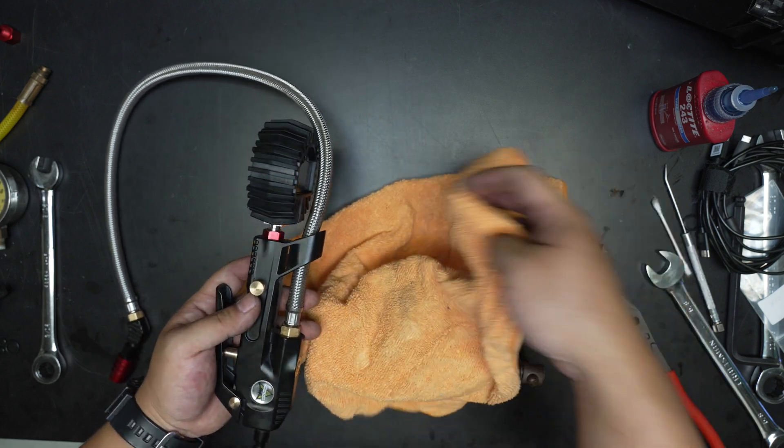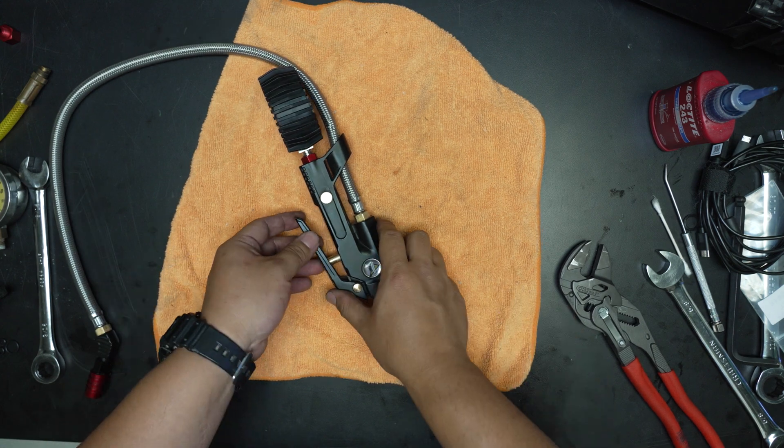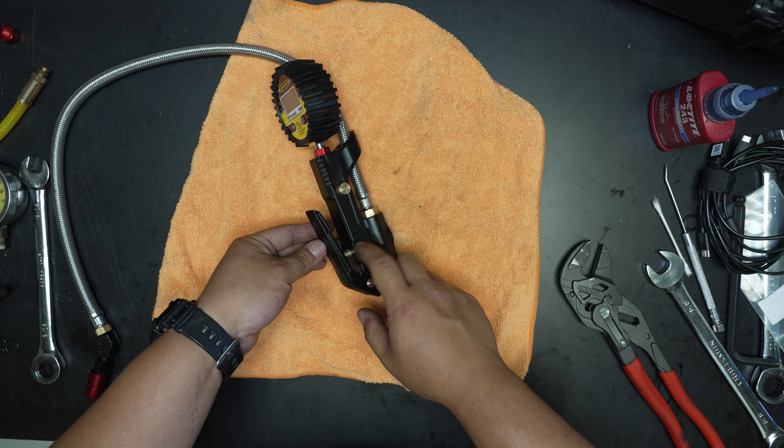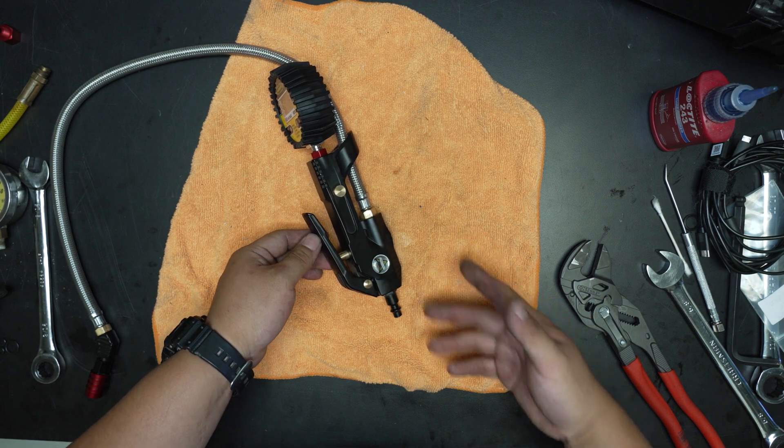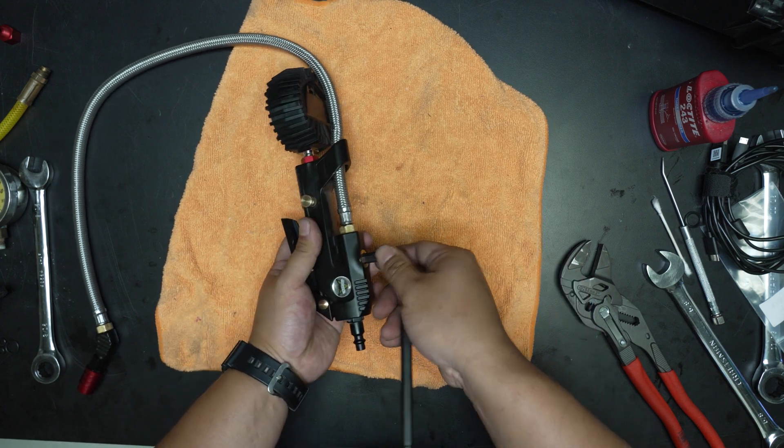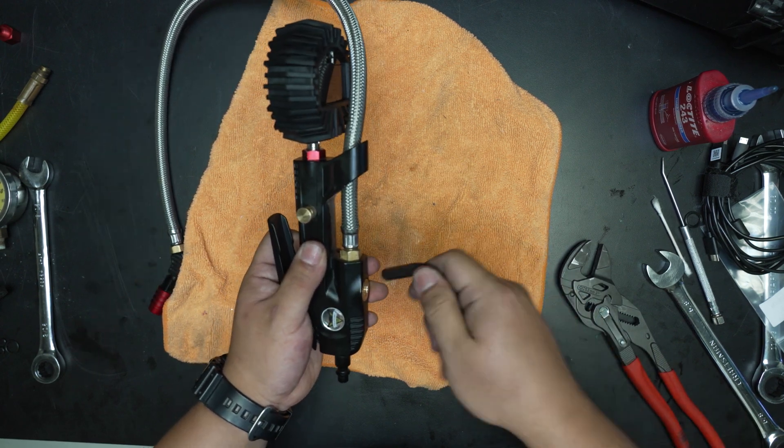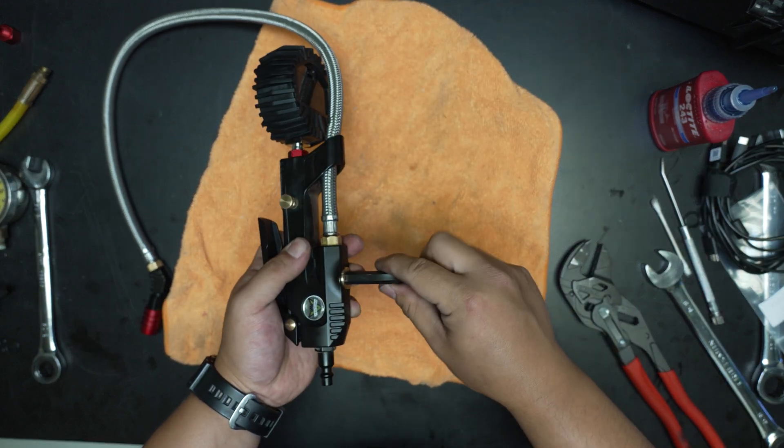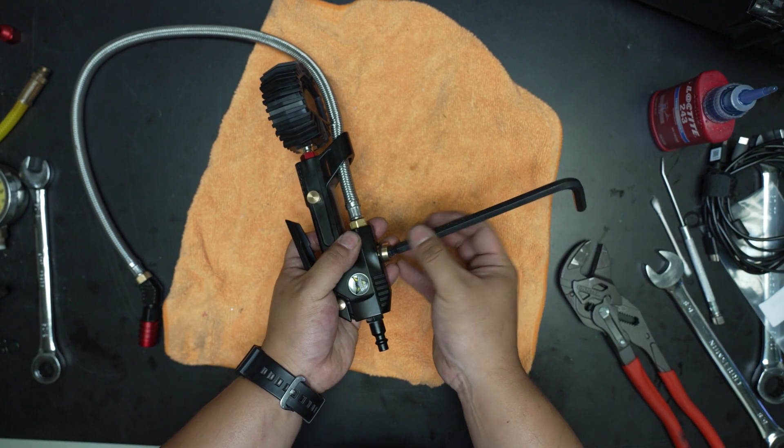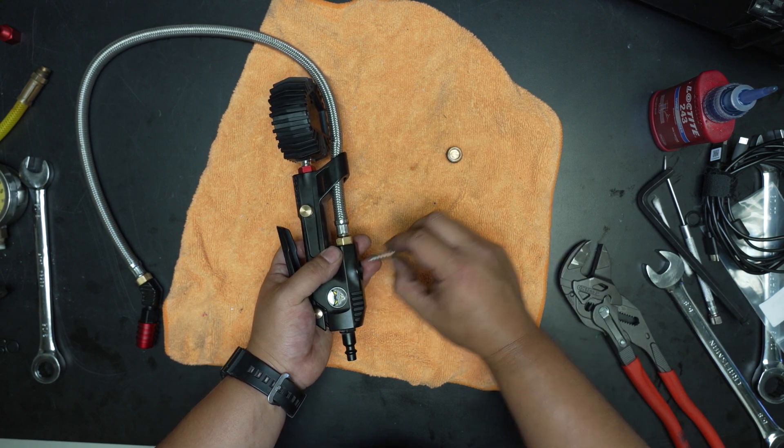And then the last thing we'll show you on this is how to service the piston. So over time you can get dirt and debris in your piston, it just needs a little cleaning. Eight millimeter wrench into this cap. Watch out it doesn't spring away from you. All right, spring.